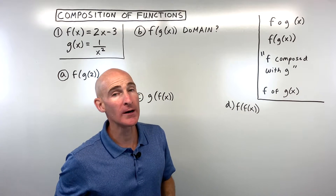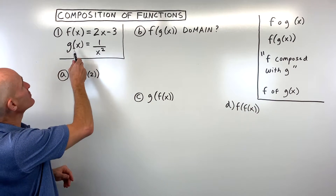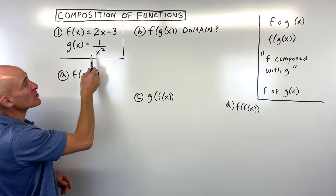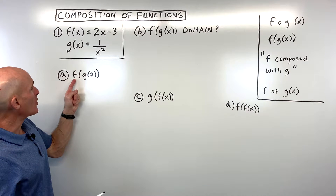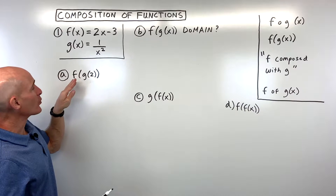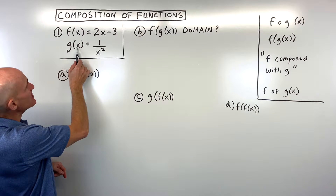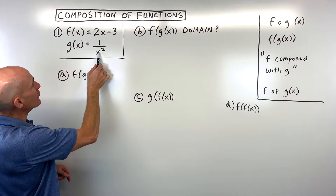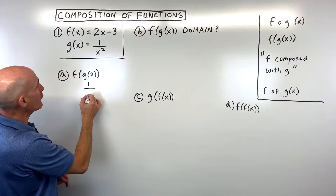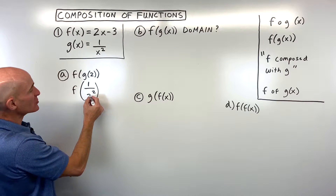We're going to go through four comprehensive examples to get a feel for how this works. Say our two functions are f of x equals 2x minus 3, and g of x equals 1 over x squared. We want to calculate f of g of 2. Starting on the inside and working our way out, we go to our g function. Whatever's in parentheses goes in for x on the right, so we put 2 in place of x: that's 1 over 2 squared.